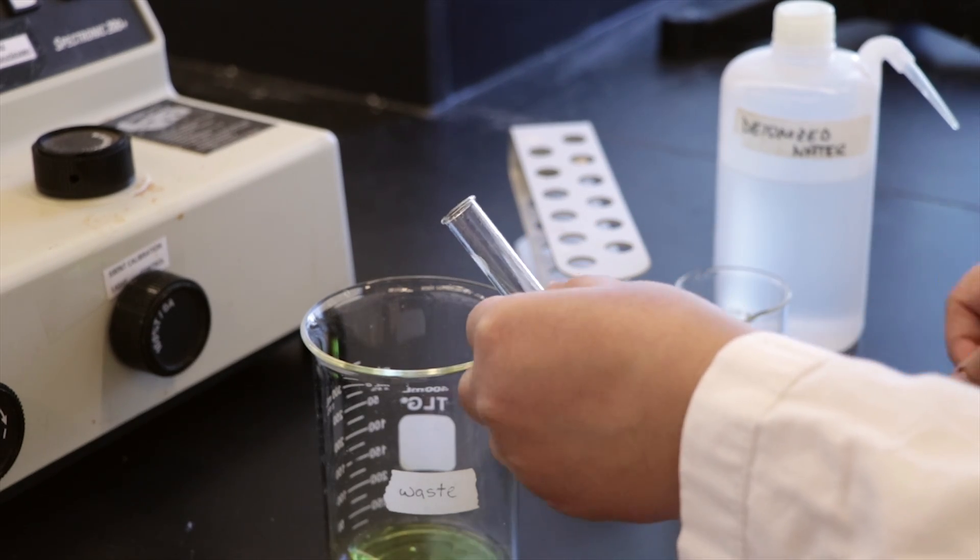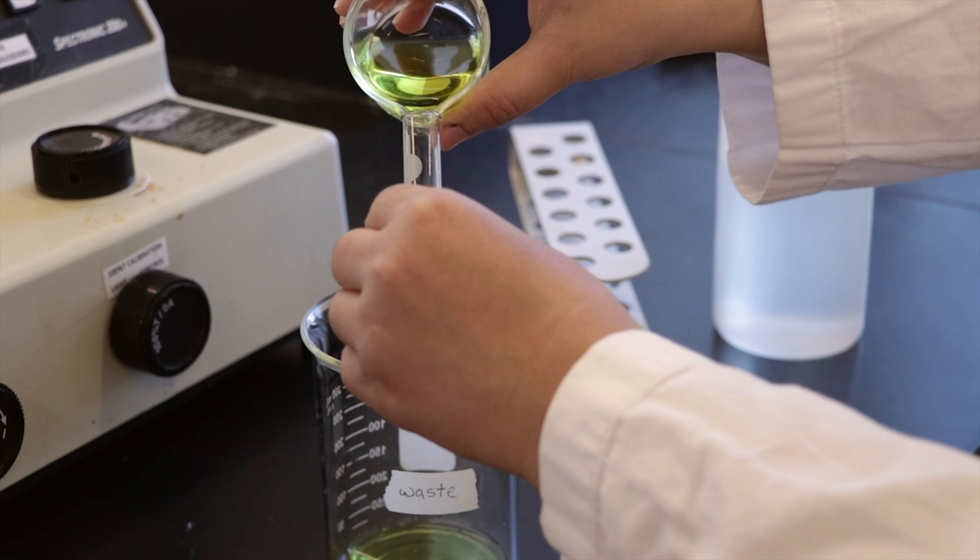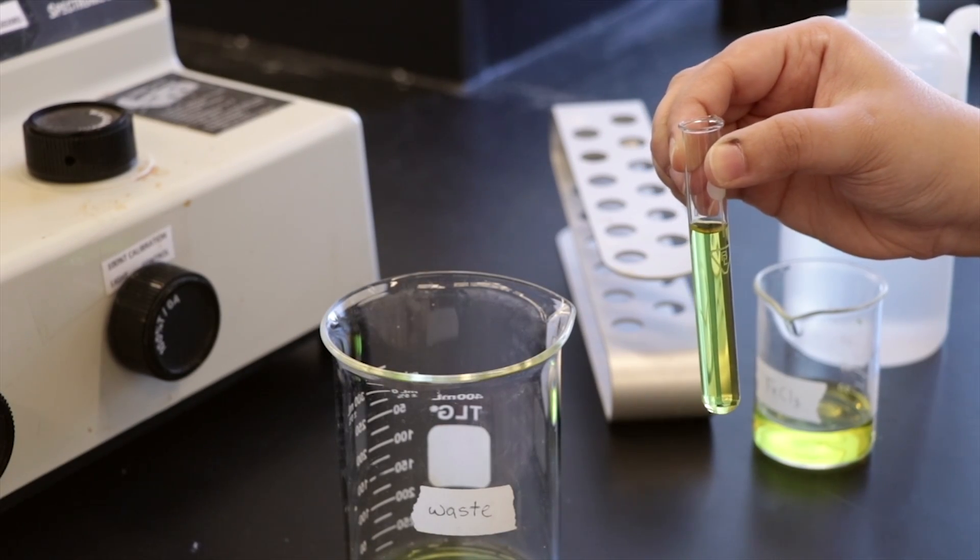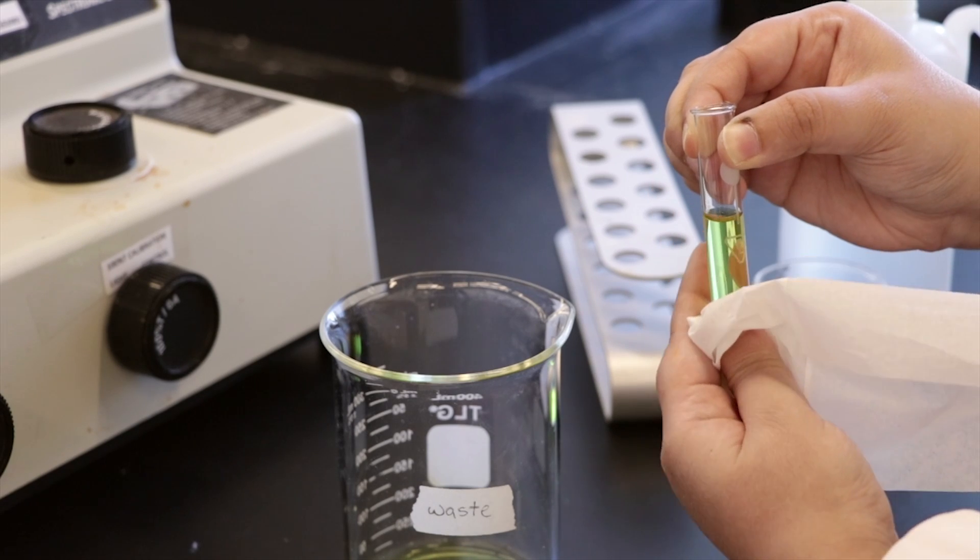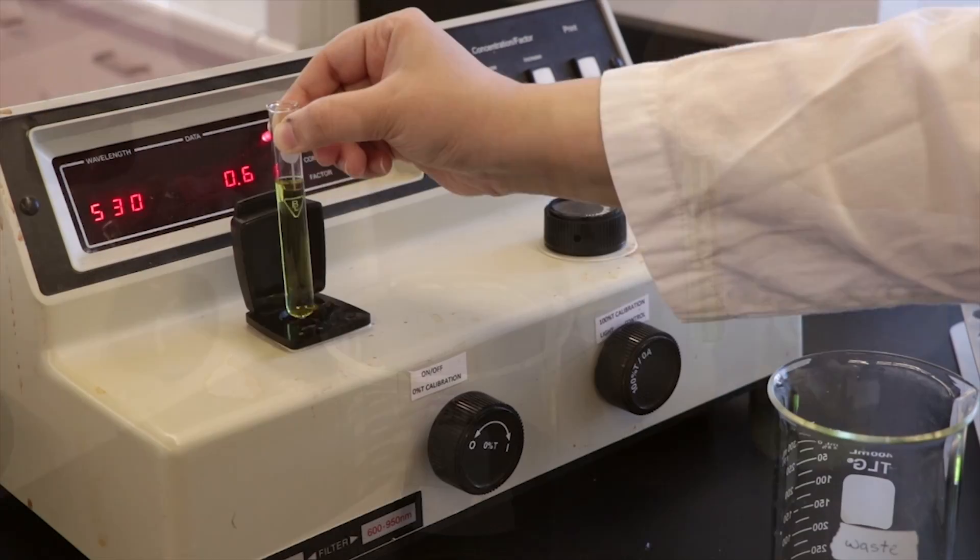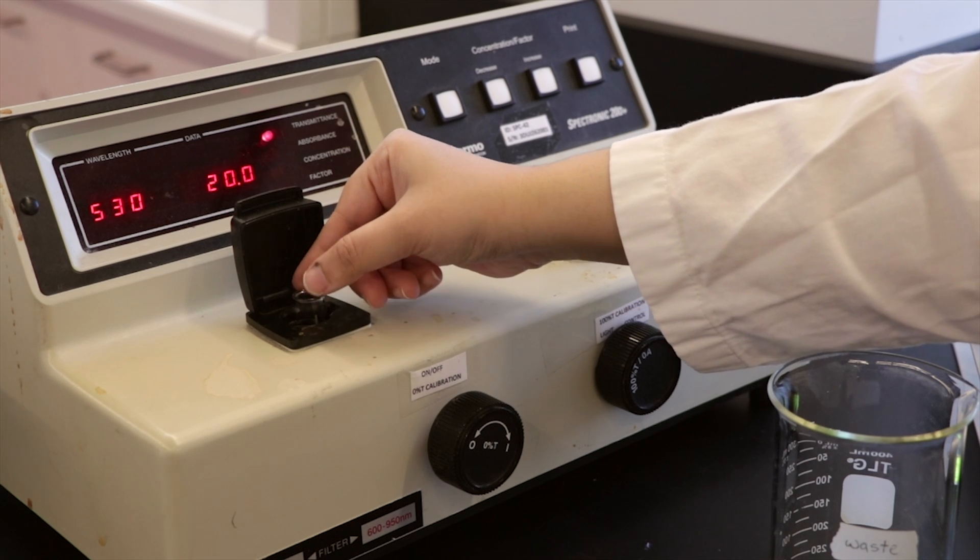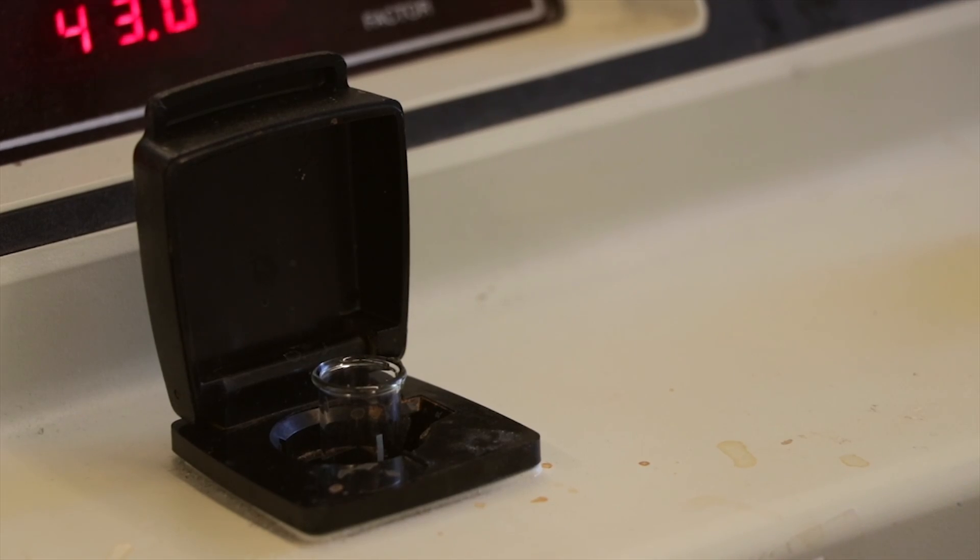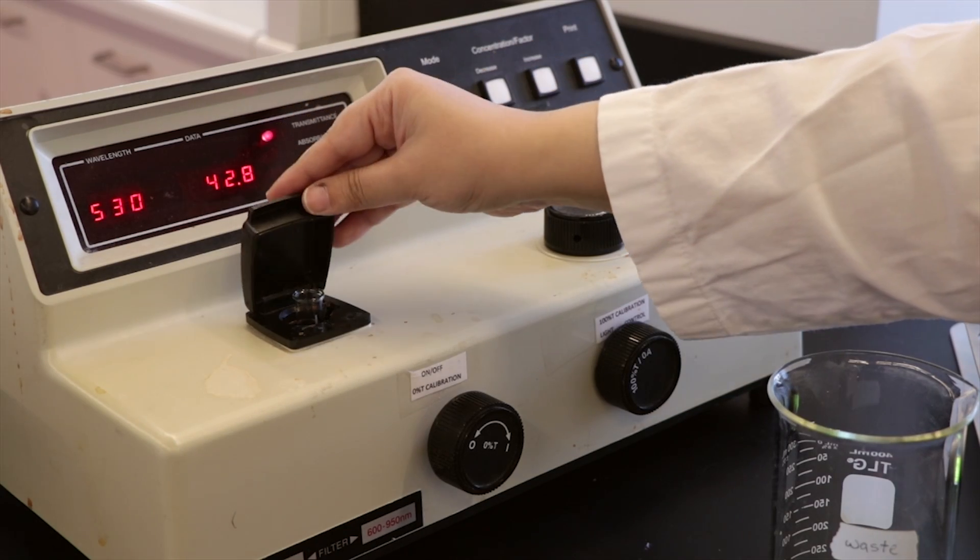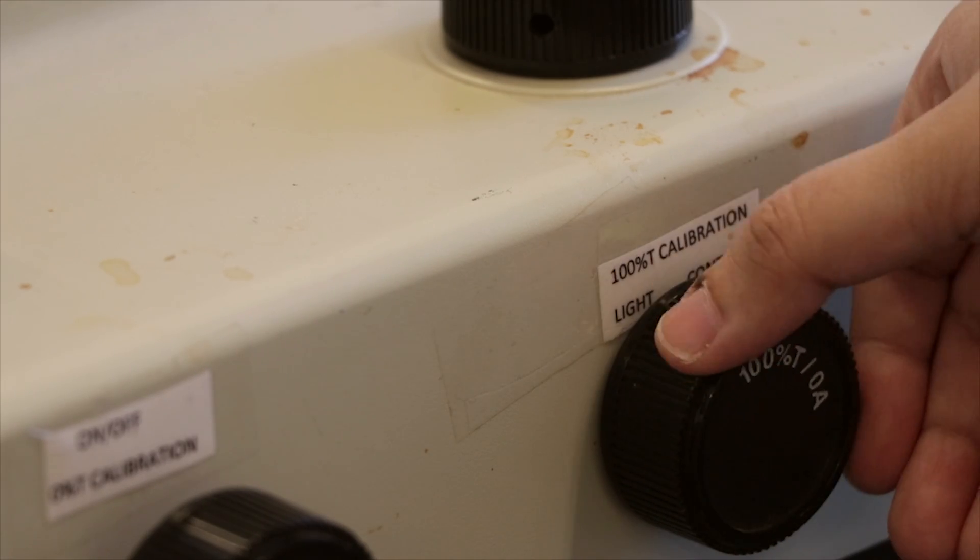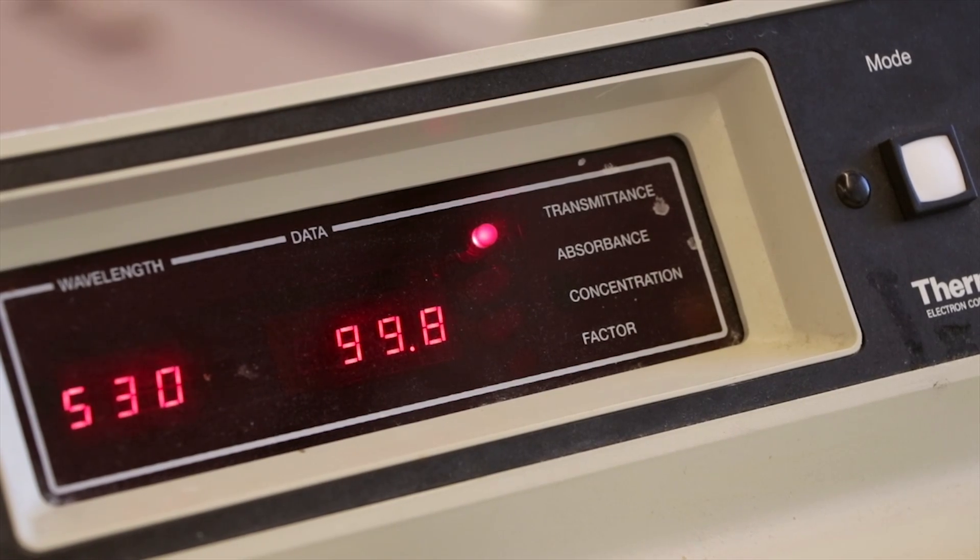You will use the FeCl3 to set 100% transmittance before analyzing your samples. Fill the cuvette to about two-thirds of the cuvette height and wipe the outside of the cuvette before placing it in the cuvette holder. Make a note of how the cuvette is placed in the holder. It should face the same direction for all subsequent readings. Close the lid and use the right dial to set 100% transmittance.